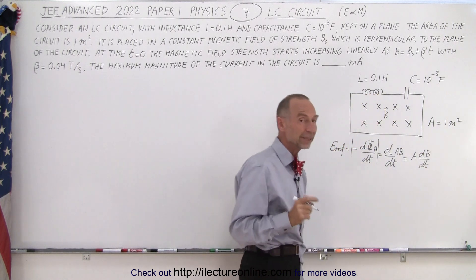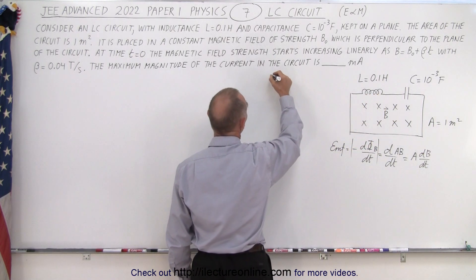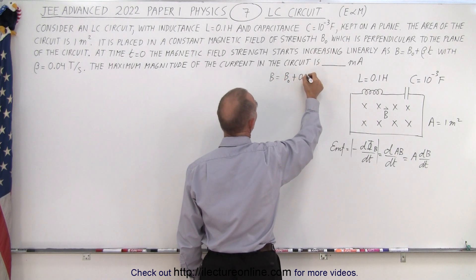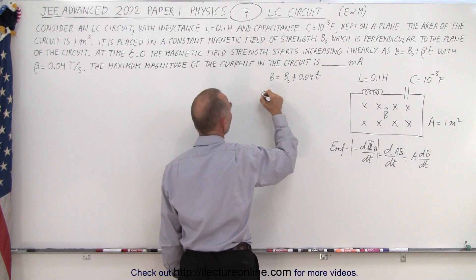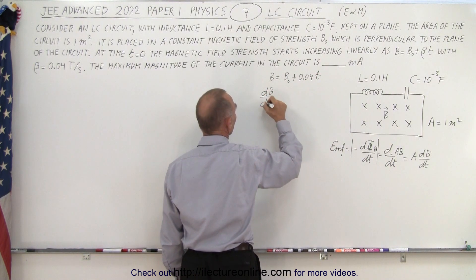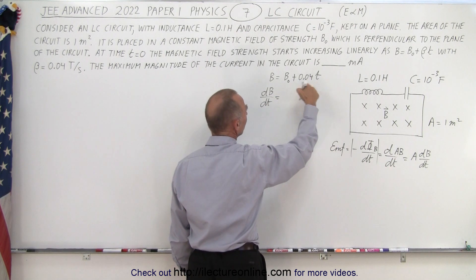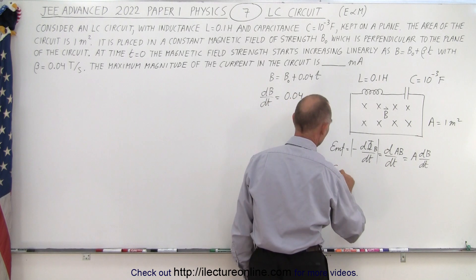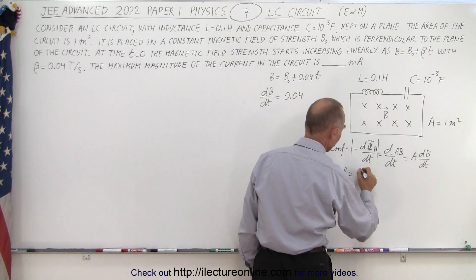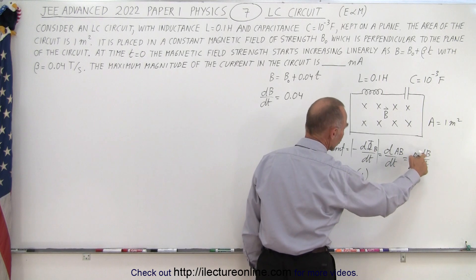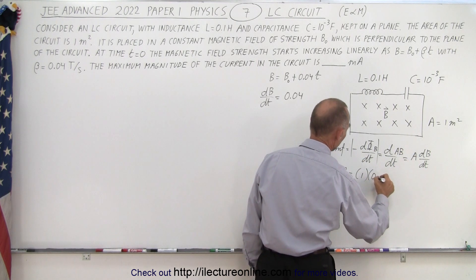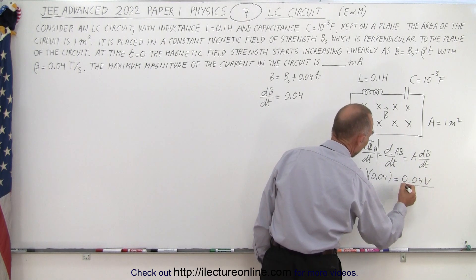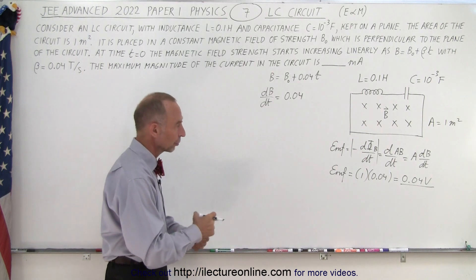We're looking for the changing magnetic field. Since B equals B-naught plus 0.04·t, dB/dt is simply 0.04. So the EMF induced equals the area — 1 square meter — times the change in magnetic field with respect to time, which is 0.04. That gives us 0.04 volts as the induced EMF in the circuit.